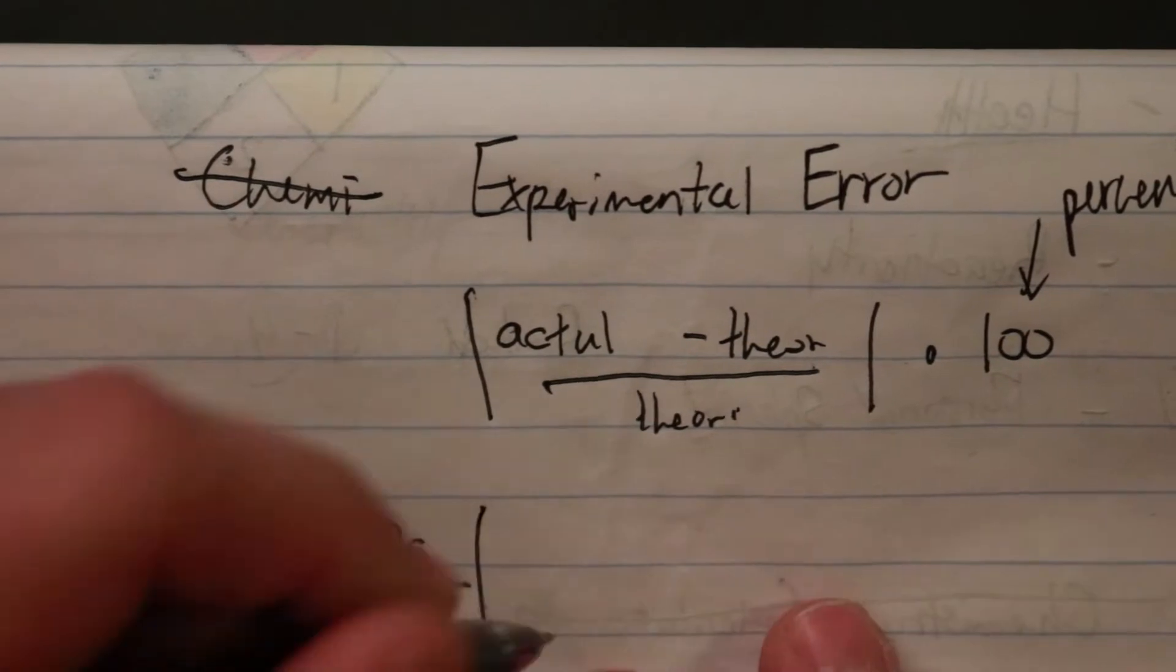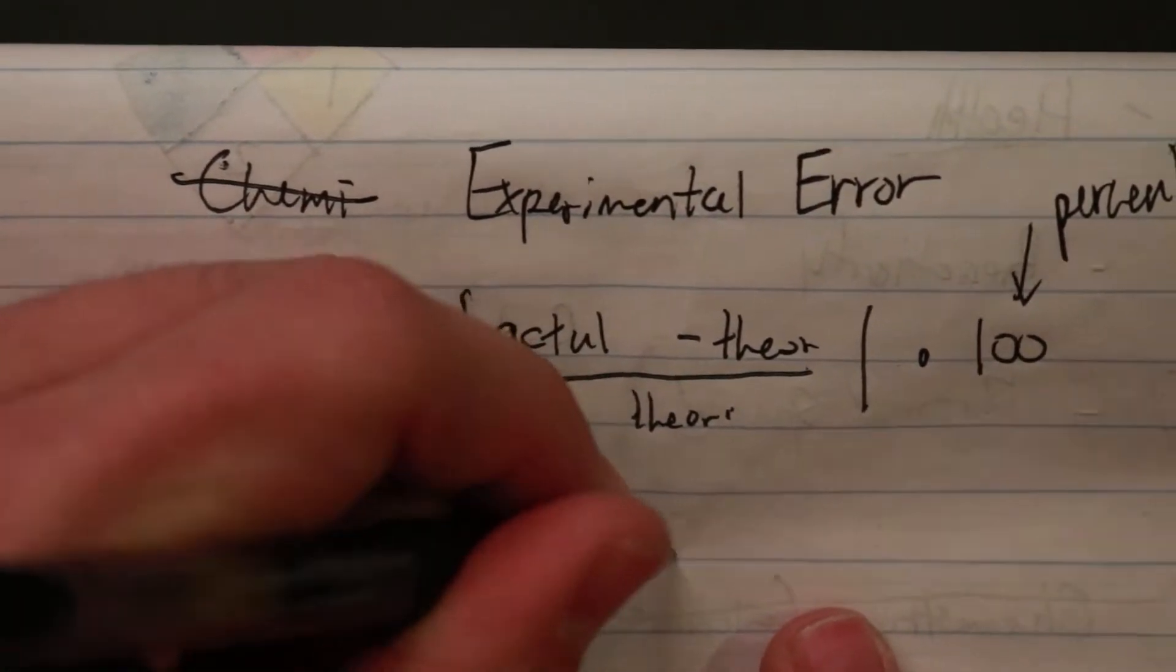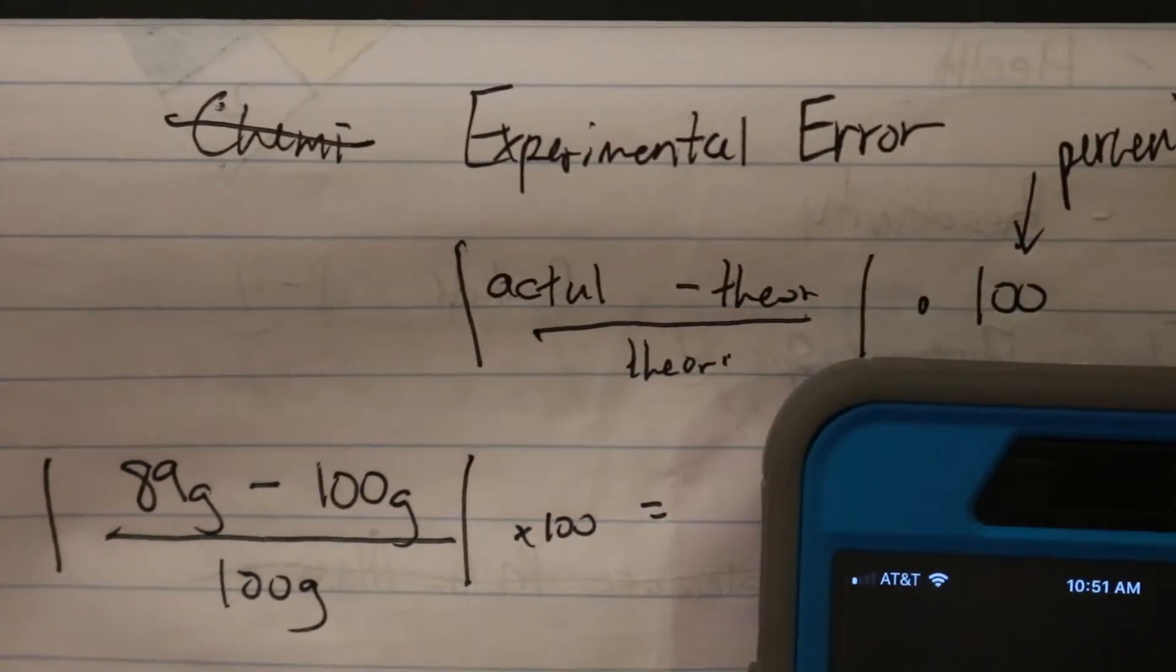I'm going to take the absolute value of that, I'm going to multiply it by 100, and that's going to give me a number. So I'm going to do that with my phone calculator here.